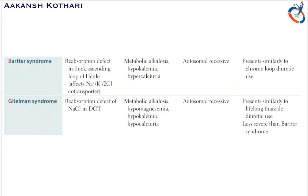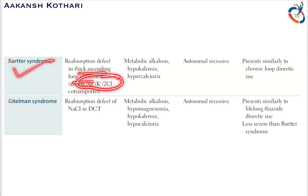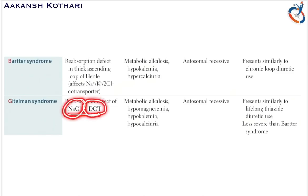Gitelman syndrome is a reabsorption defect of sodium chloride in the distal convoluted tubule. In Bartter syndrome it was the thick ascending loop of Henle affecting the sodium-potassium-two chloride co-transporter. In Fanconi syndrome it was the PCT where the entire reabsorption was impaired. In Gitelman syndrome it is the DCT and the reabsorption of NaCl is impaired. Notably, metabolic acidosis is only present in Fanconi syndrome, whereas all other syndromes have metabolic alkalosis.